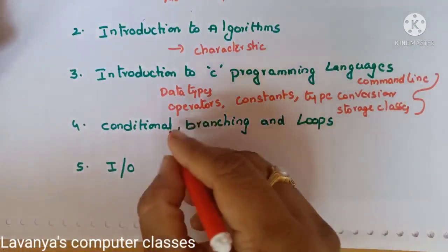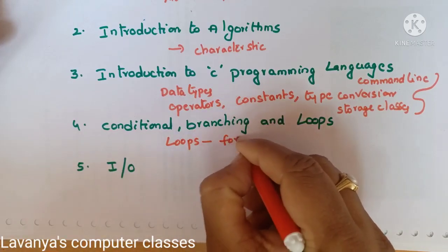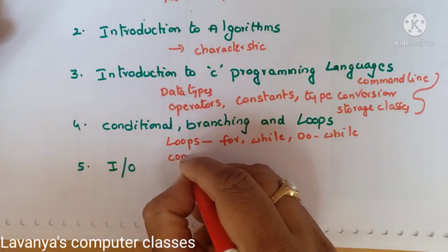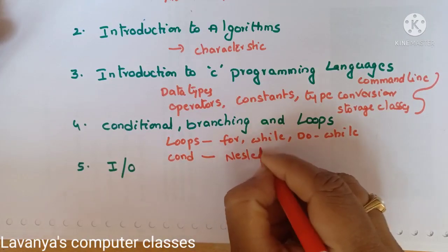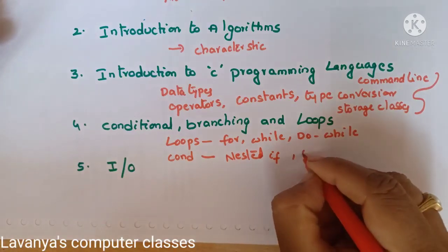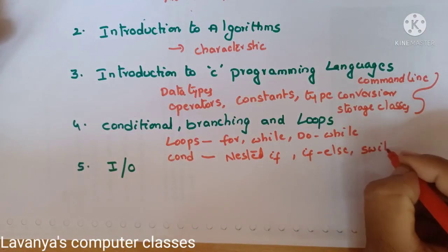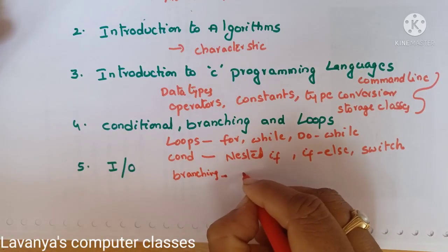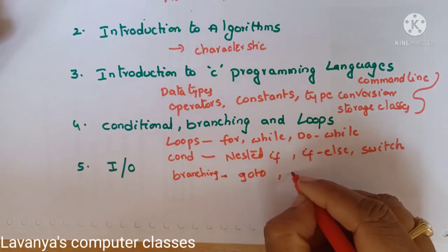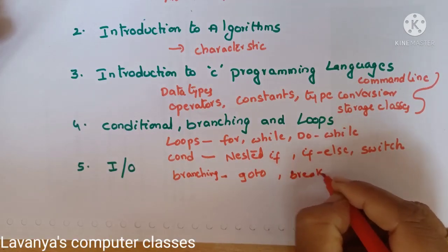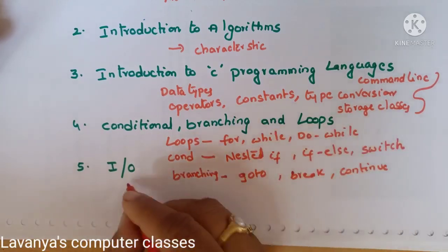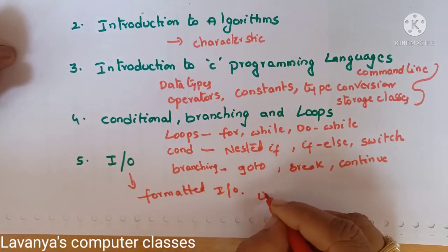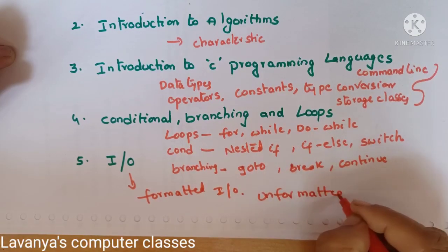In conditional branching and loops, loops are very, very important. Loops means for loop, while loop, and do-while — these three explained with example programs. Conditional statements: concentrate on if-else, nested-if, and switch statement with all example programs. In branching and jumping statements, we cover goto, break, and continue statements. In the I/O statements, we learn formatted I/O and unformatted I/O statements. These are the important questions in unit one.